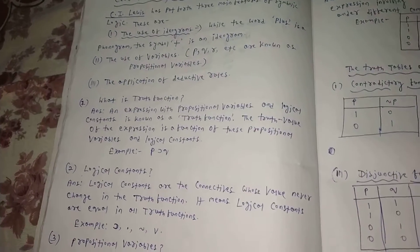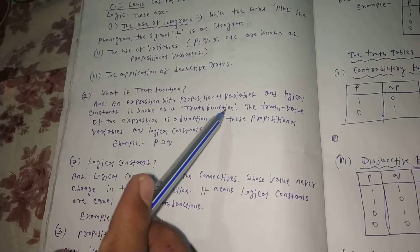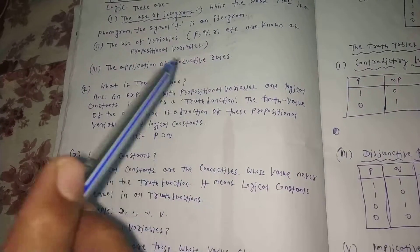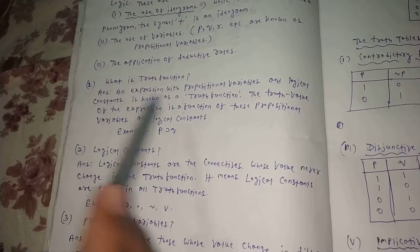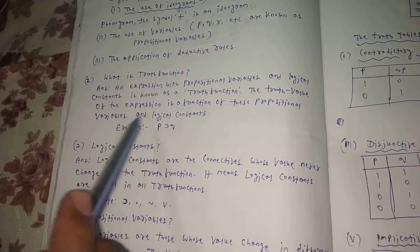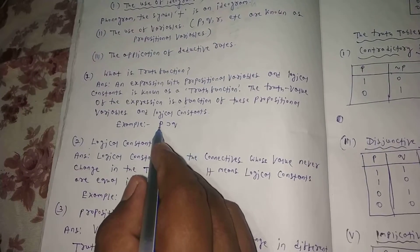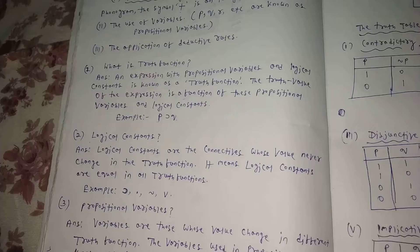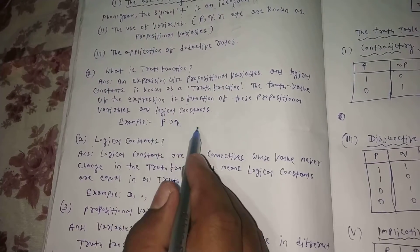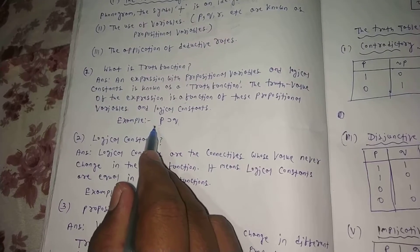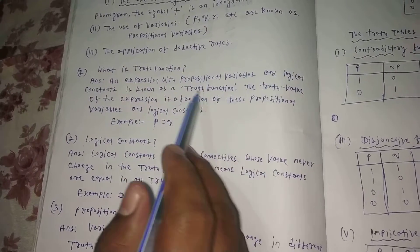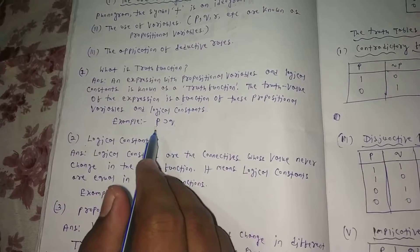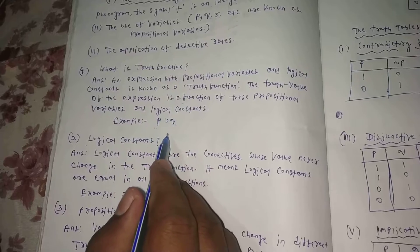The truth function: an expression with propositional variables and logical constants is known as a truth function. The truth value of the expression is a function of these propositional variables and logical constants. For example, P implication Q — together we call it a truth function.